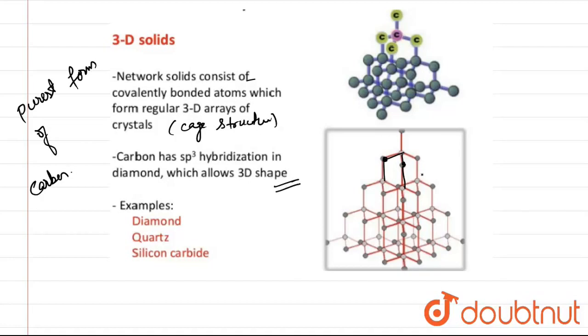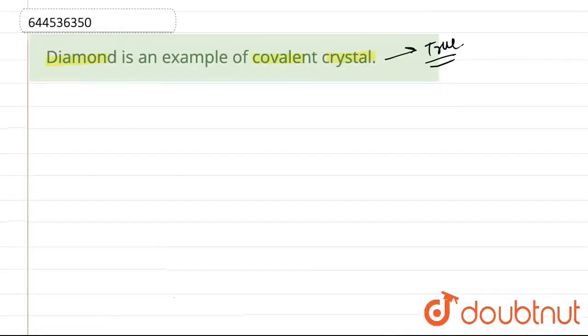So, we can say that since each carbon is covalently bonded to four other carbon atoms, diamond is an example of a covalent crystal.